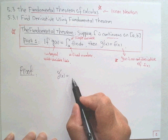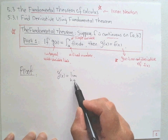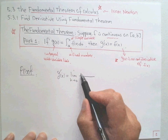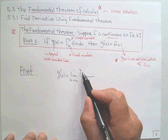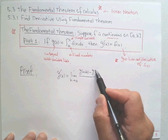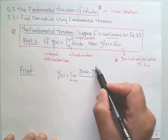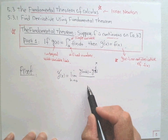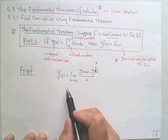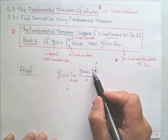The derivative of g(x) should be the limit as h approaches 0 of delta y over delta x. Delta y this time is g(x + h) minus g(x), and delta x is h. That's the definition. We use the definition to find the derivative.